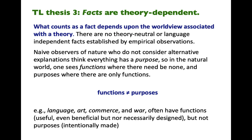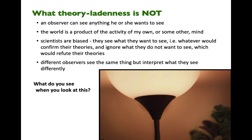I need to make clear what theory-ladenness is not. It's not the idea that an observer can see anything he or she wants to see. It's not the idea that the world is a product of the activity of my own or some other mind. It's not the idea that scientists are biased — that they see what they want to see, whatever would confirm their theories, and ignore what would refute them. And it's not the idea that different observers see the same thing but interpret what they see differently.